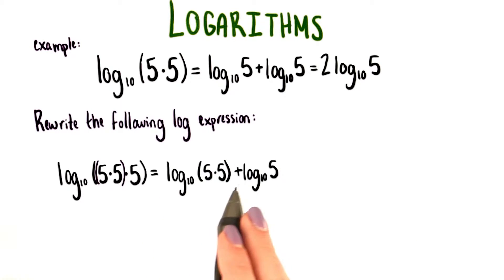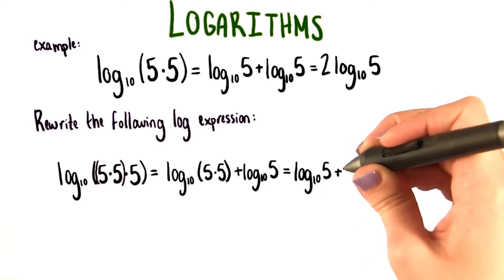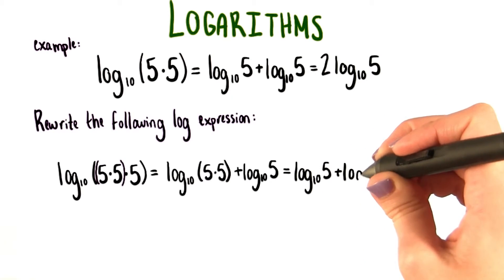Conveniently, we've already found this. That's what we got up here. Log base 10 of 5 times 5 is just log base 10 of 5 plus log base 10 of 5.